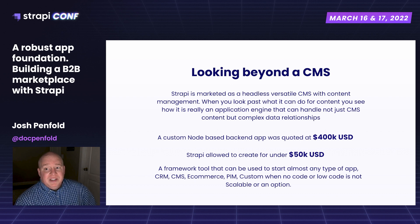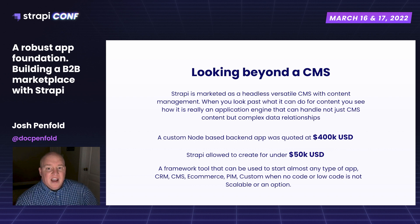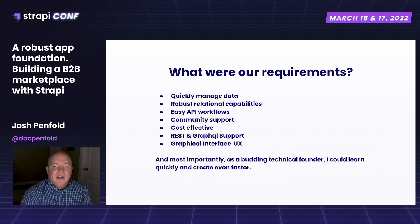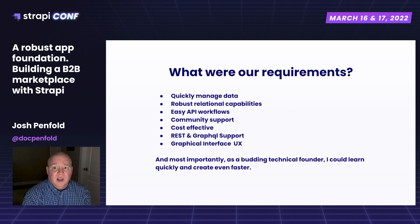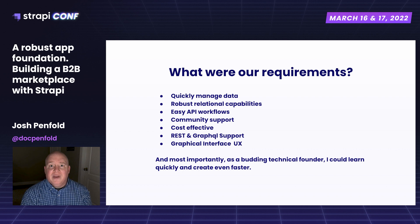Because of the simplicity of it, we were able to quickly adapt our data models, add fields and content without having to go too deep through the architecture. Our requirements when we started looking at Strapi were: manage data, have robust relational capabilities, and quickly build a scalable data model for multiple content and product types. Cost effectiveness with our limited budget and a graphic-intensive UX were also key — Strapi just hit everything perfectly.